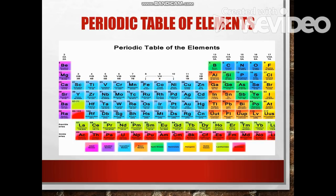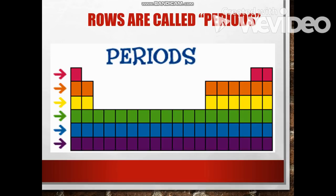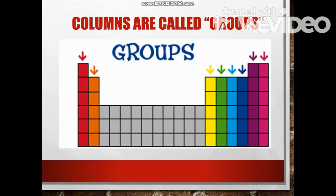The periodic table is divided into two different parts. First, let's talk about periods — the horizontal rows of the periodic table. There are seven periods in our periodic table. The elements in a period are not alike in properties; in fact, properties change greatly across a given row. The first element in a period is always an extremely active solid, and the last element in a period is always an inactive gas.